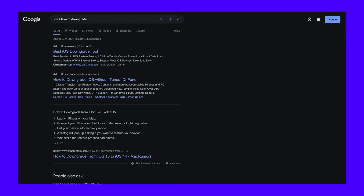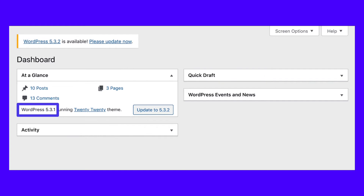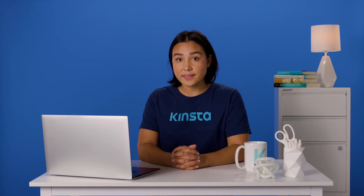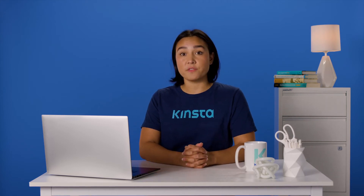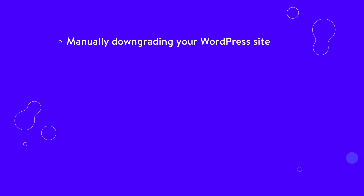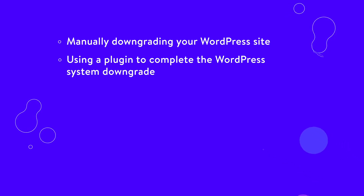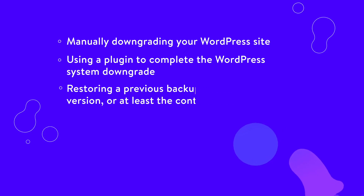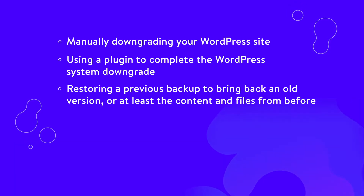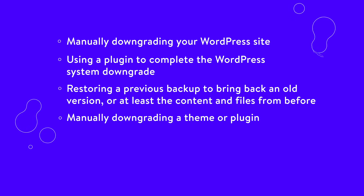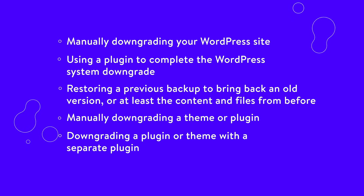For all systems outside of WordPress, search for platform name plus how to downgrade. If you use WordPress, you can easily downgrade your WordPress website, effectively rolling it back to one of the previous versions. Check out the following methods for downgrading your WordPress site, most of which only take a few minutes: manually downgrading your WordPress site, using a plugin to complete the WordPress system downgrade, restoring a previous backup to bring back an old version or at least the content and files from before, manually downgrading a theme or plugin, and downgrading a plugin or theme with a separate plugin.